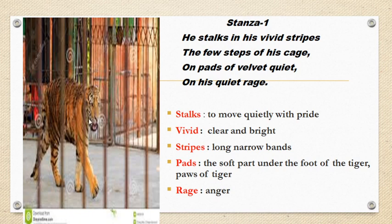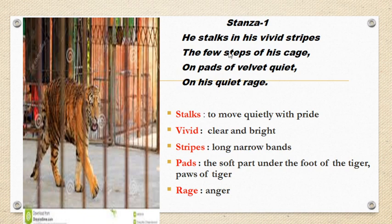Let us read the first stanza. You can see the picture of the tiger in the cage and how aggressive he is. Stanza number one: 'He stalks in his vivid stripes, the few steps of his cage, on pads of velvet quiet, in his quiet rage.'